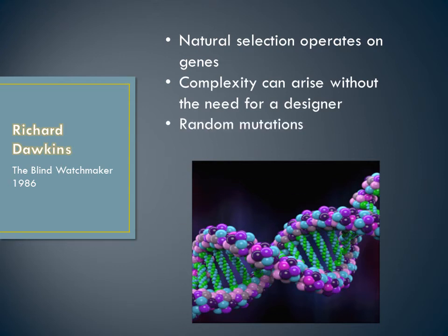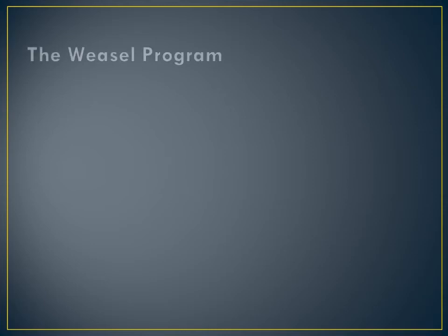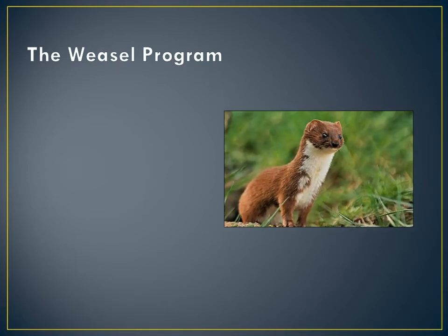He refers to random mutations and to cumulative selection to make his point. Dawkins makes the point that complexity can arise by random chance alone. He uses an example of a computer program he developed called the Weasel Program. This idea was adapted from a challenge to the teleological argument, which says that given infinite time and a group of monkeys with typewriters, they could produce the works of Shakespeare through randomly bashing the keys. This suggests that the universe could have come about by random chance, with no need for a designer. Dawkins' Weasel Program simplifies this example.